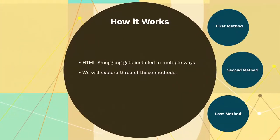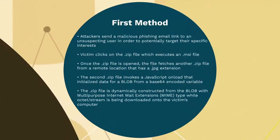HTML smuggling gets installed in various ways. Let's examine a few of these. The first is by phishing. Attackers send a malicious phishing email link to an unsuspecting user. The victim then clicks on the zip file, which executes an MSI file. Once the zip file is opened, it fetches another zip file from a remote location with a JPEG extension that contains the malicious payload.